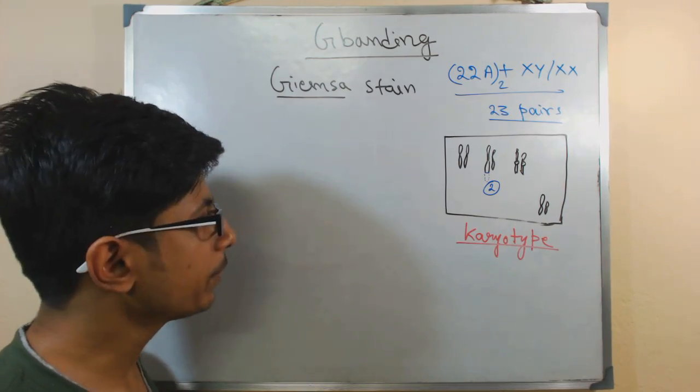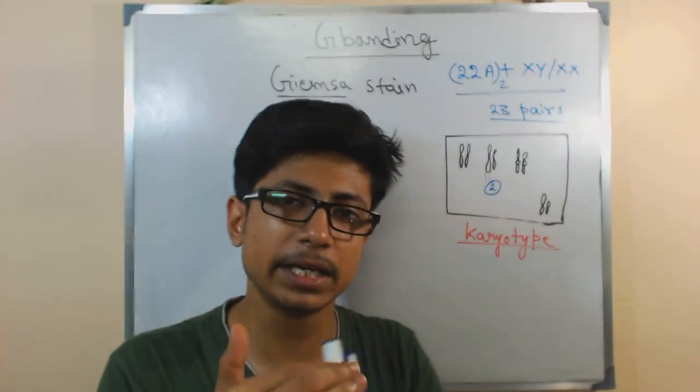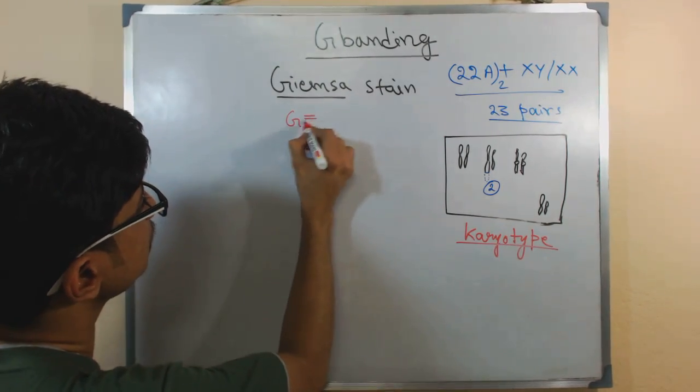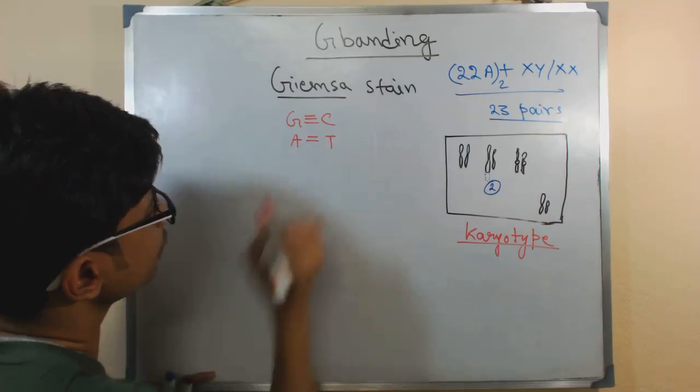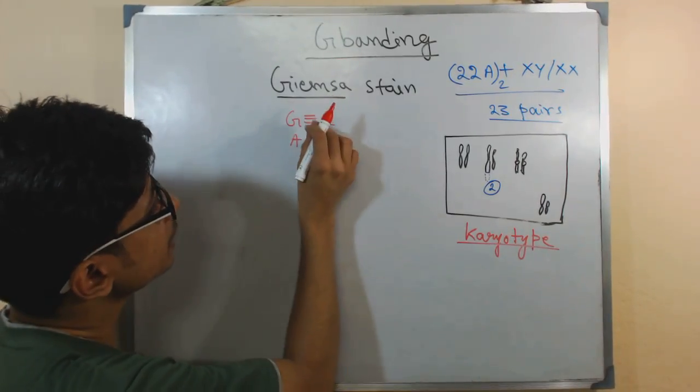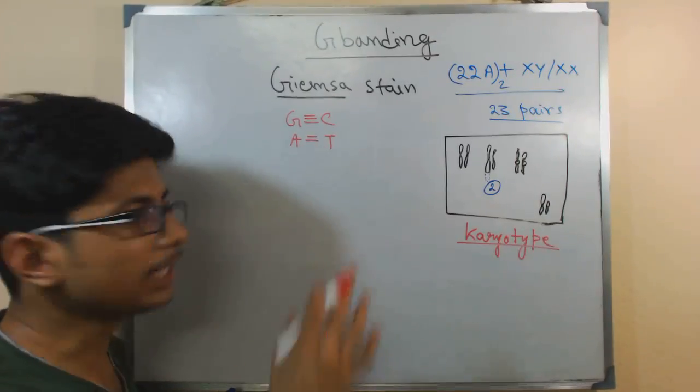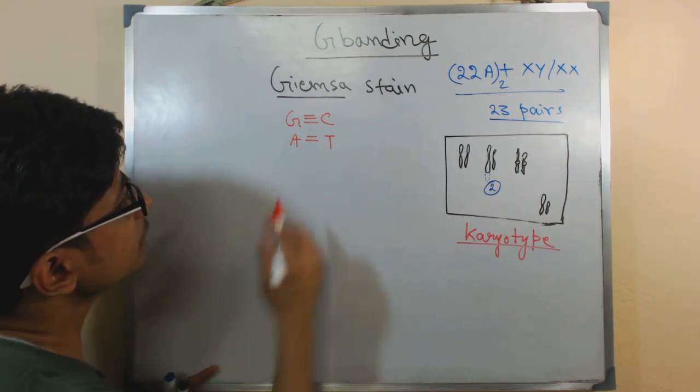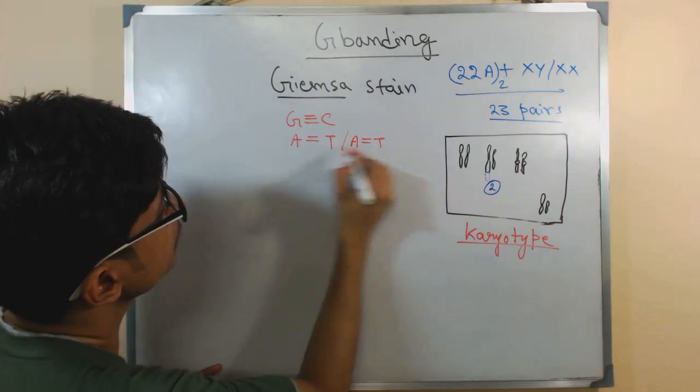Now this stain can give the color to the chromosomes. Why? Because this is a kind of intercalating coloring agent. That means if there is a presence of all those bases like GCs and AT, both types of bases, this Giemsa stain is going to stick to them and then finally give us the coloration.